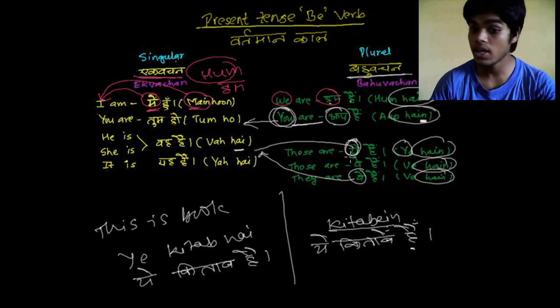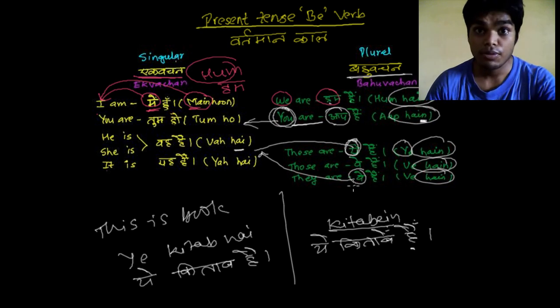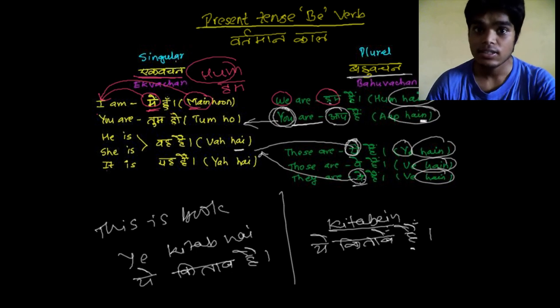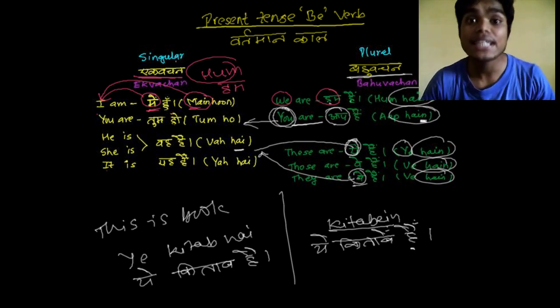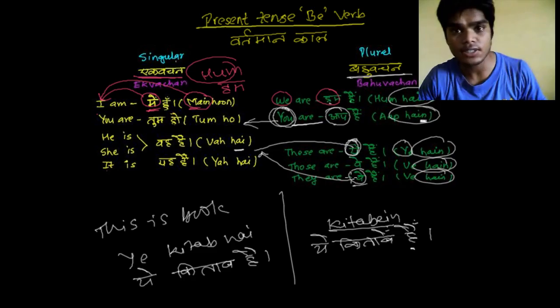In plural the ending is always 'hain' — 'aap hain', 'yeh hain', 'woh hain'. If a single person is a little far and I say 'woh cricketer hai', it means he or she is a cricketer. So keep in mind: 'hum' can be used for singular meaning 'I'; 'aap' can be used as singular also; and 'yeh' and 'woh' can be used as singular as well. See you in the next video — goodbye, and I'm sure you're going to subscribe to the channel and hit the like button!